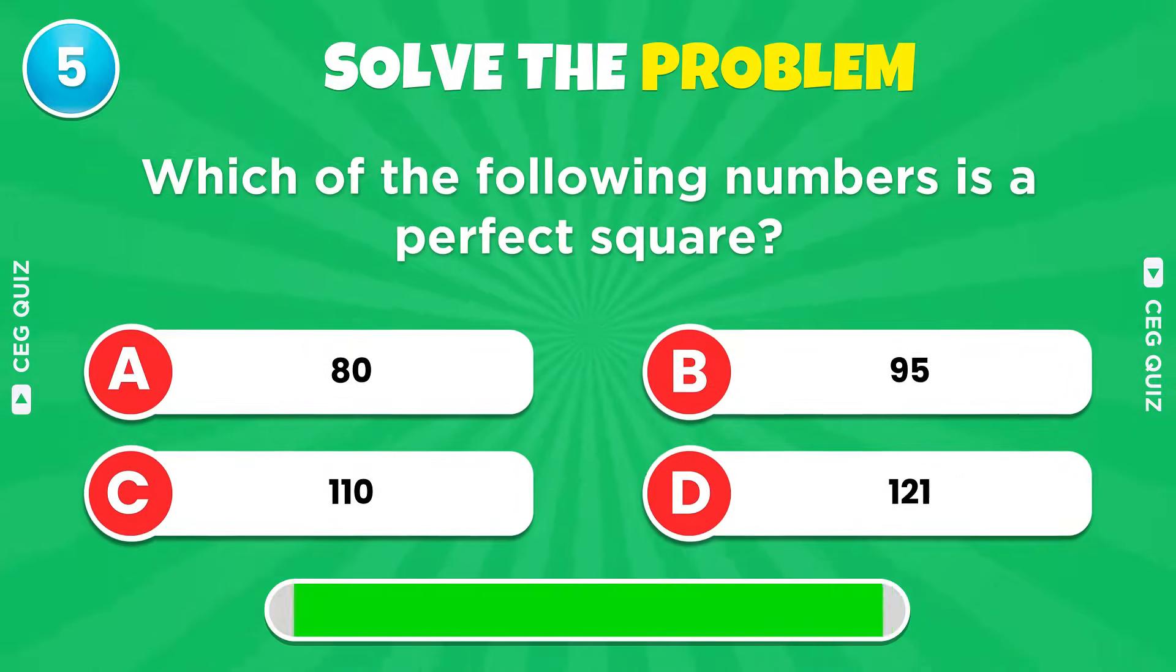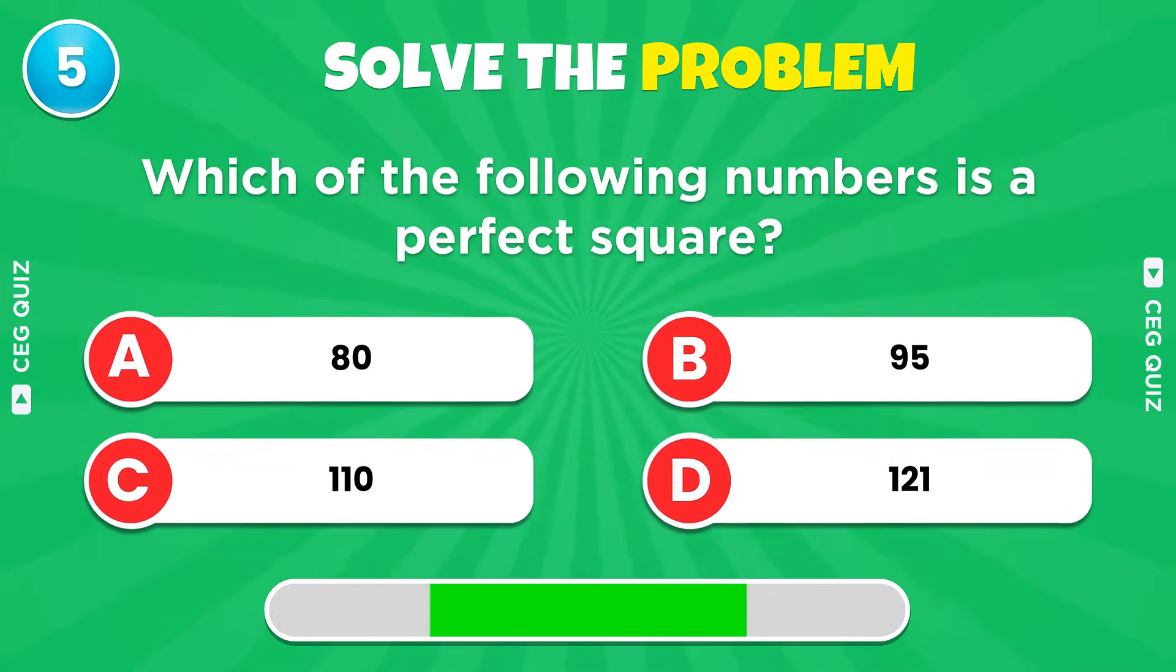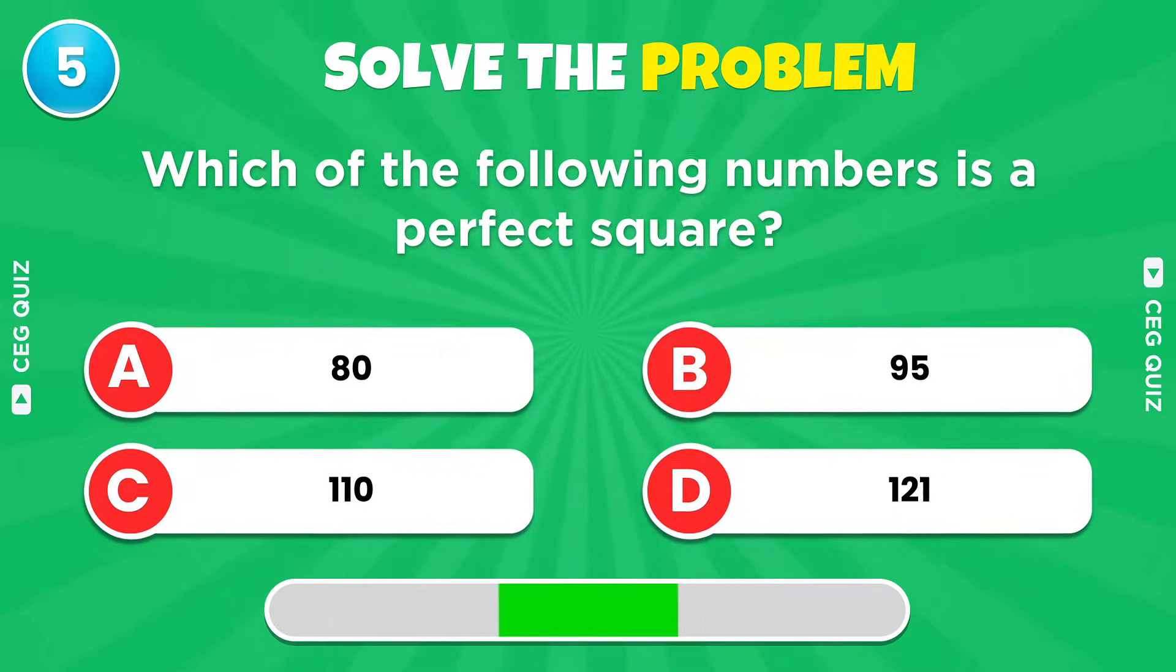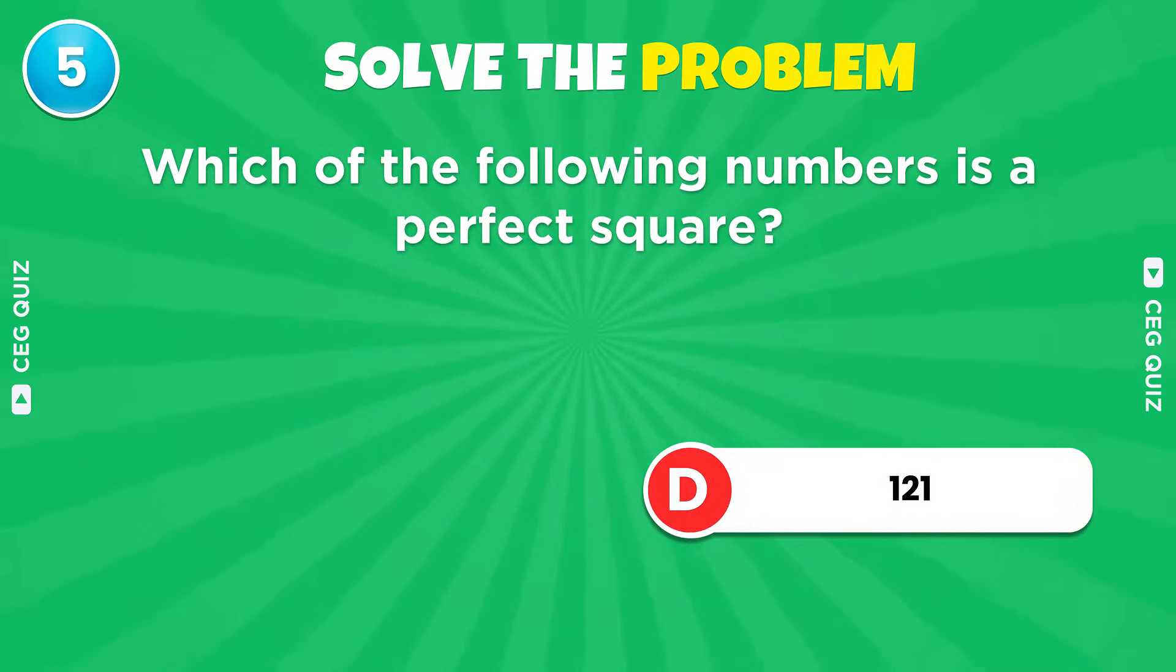Which of the following numbers is a perfect square? 121.